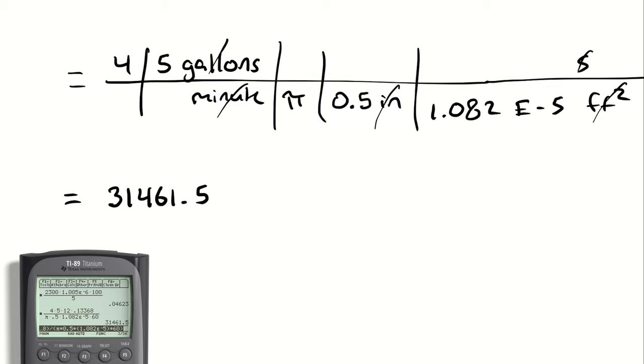We're comparing that number to our critical Reynolds number, which is 2300. I see that my Reynolds number is greater than that. Therefore, I have turbulent flow. Or more accurately, we're characterizing this as turbulent flow.